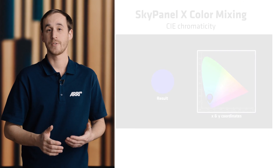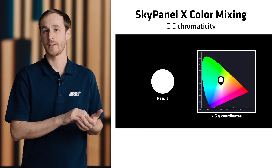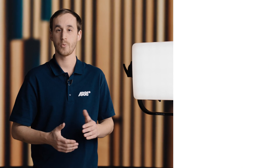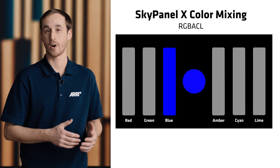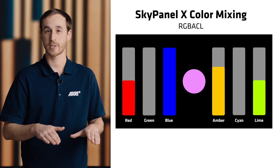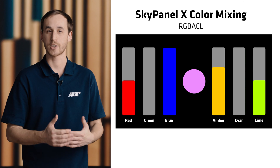We also have XY coordinates as a way to select your color. This is picking a color on the CIE chromaticity diagram, which can be really useful if you're in virtual production or any other application where it's important to have really precise control of your color. Then we have our direct RGB ACL, running each of those emitters directly without any calibration, if you just need the most saturated colors possible out of the SkyPanel X.